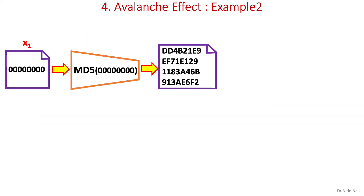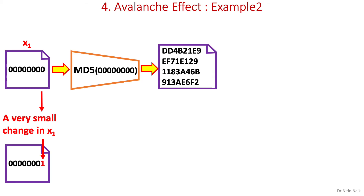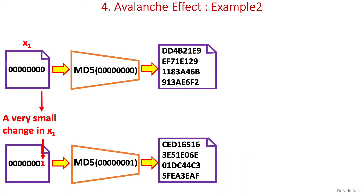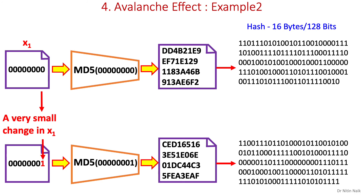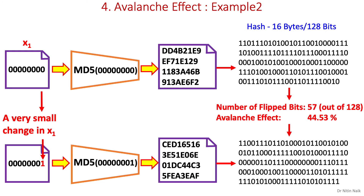Let's look at another example. Here the second input is modified by only one digit at the last position — don't confuse with bit, it is a digit. Applying the same MD5 hash function to calculate the hash of this slightly modified input, the new hash value will be significantly different from the first hash value, although both inputs are almost similar. Converting both hashes into bit sequences, the number of bits flipped is 57 out of 128, and the avalanche effect is around 44.53%, which is slightly lower than the threshold explained earlier. This is how we can evaluate the non-correlation of input and output and determine the quality of a hash function. MD5 provides that.